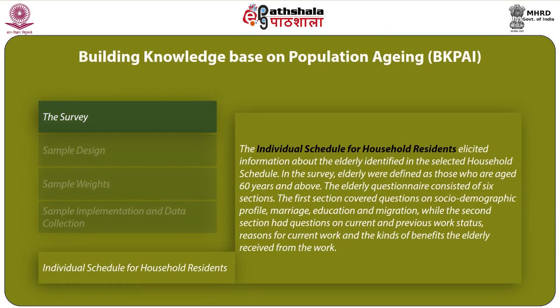The individual schedule for household residence elicited information about elderly identified in the selected household schedule. In the survey, elderly were defined as those aged 60 years and above. The elderly questionnaire consisted of six sections. The first section covered questions on socio-demographic profile, marriage, education and migration, while the second section had questions on current and previous work status, reasons for current work and the kinds of benefits the elderly received from their work.